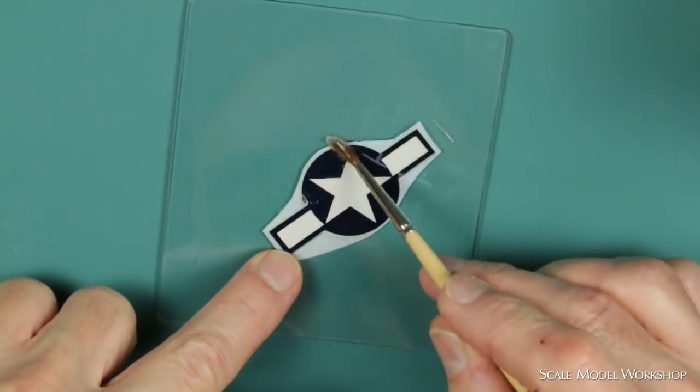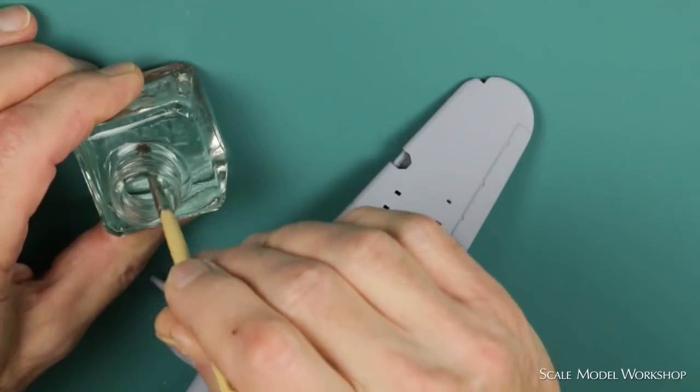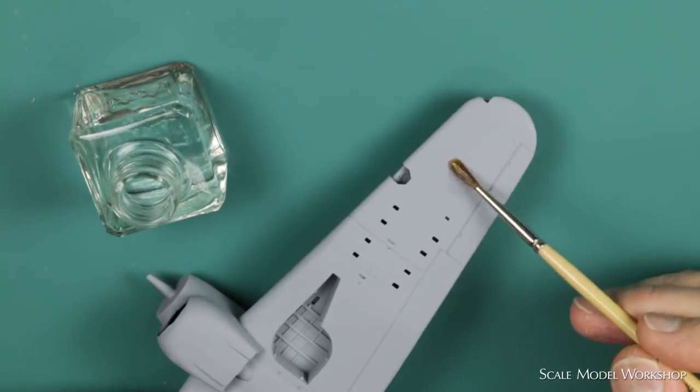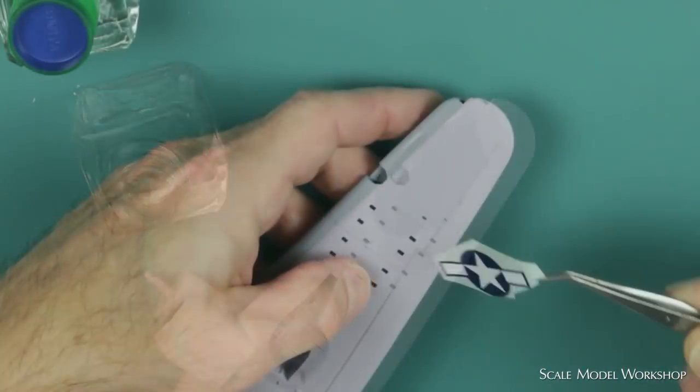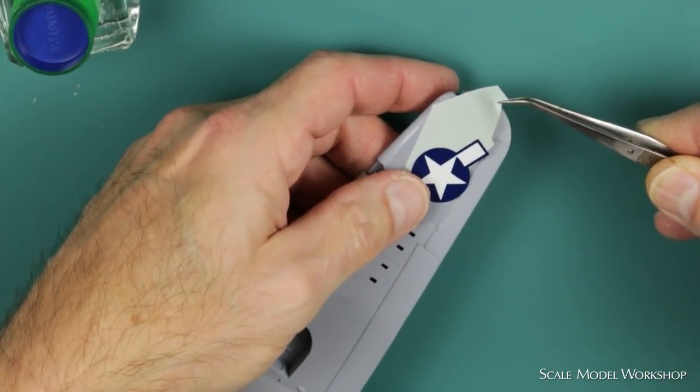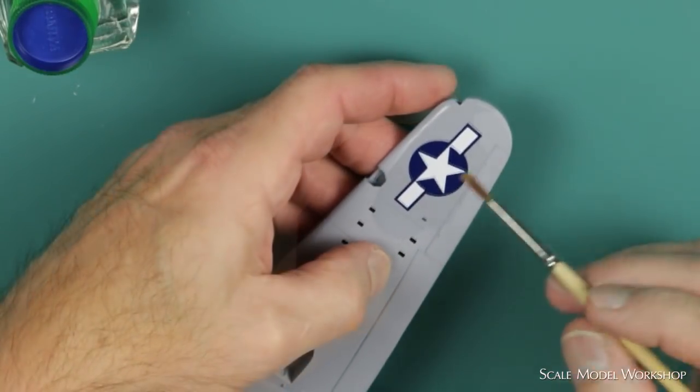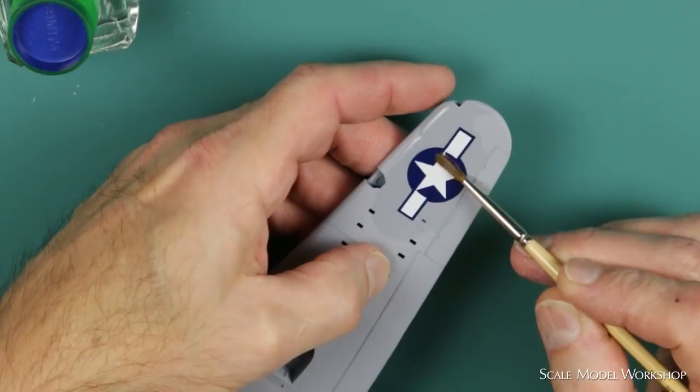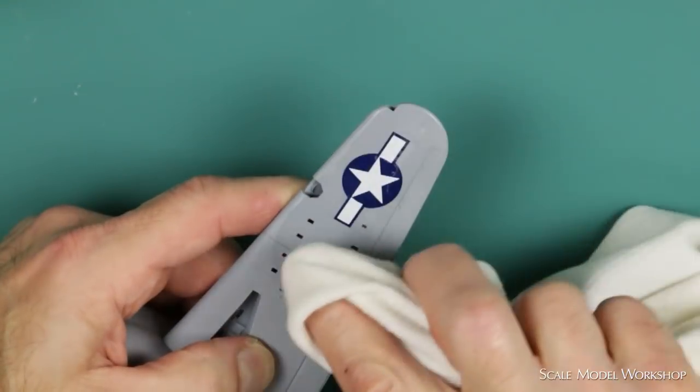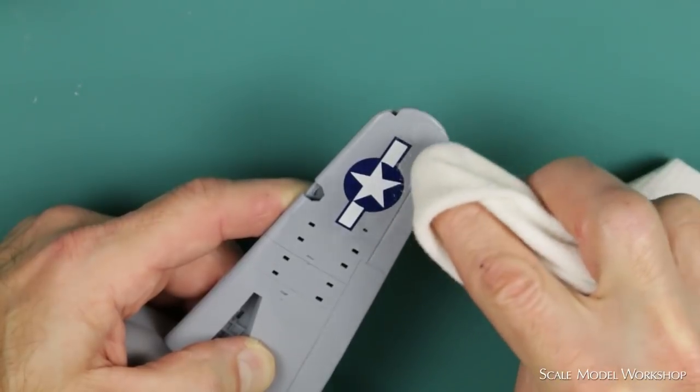Here I remove the excess film. A liberal amount of Microset is applied to the model. The decal is then transferred to the model. It's helpful to keep a liberal amount of liquid under the decal while it's being positioned.